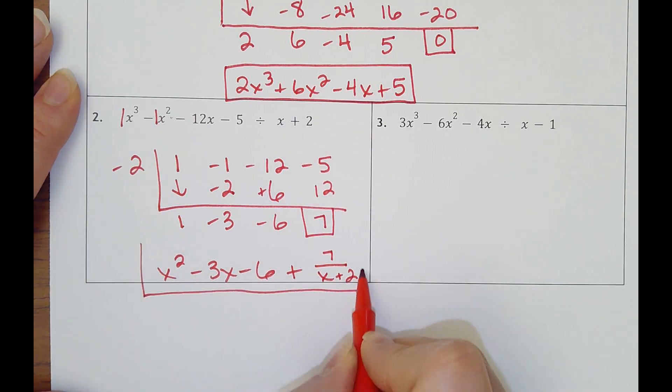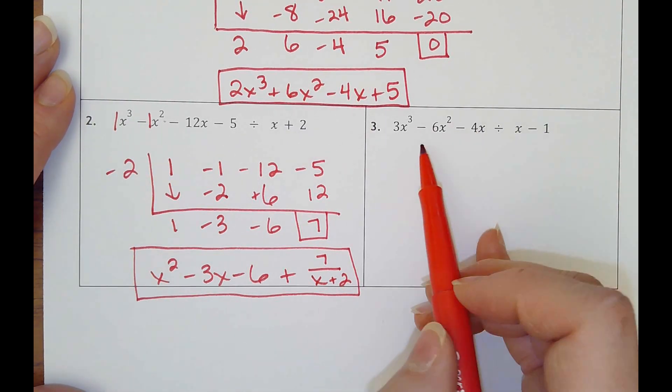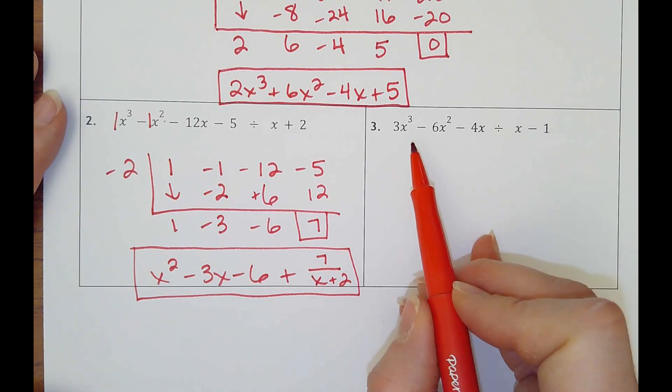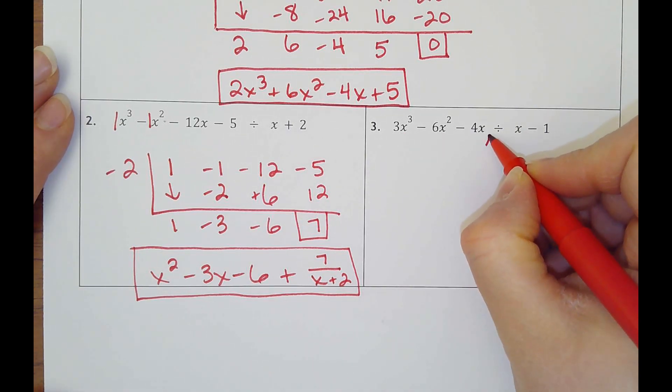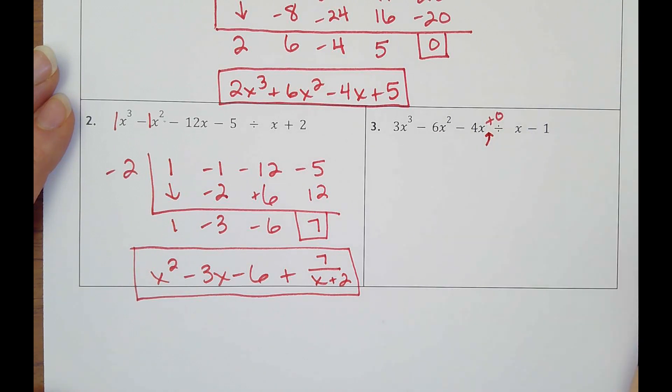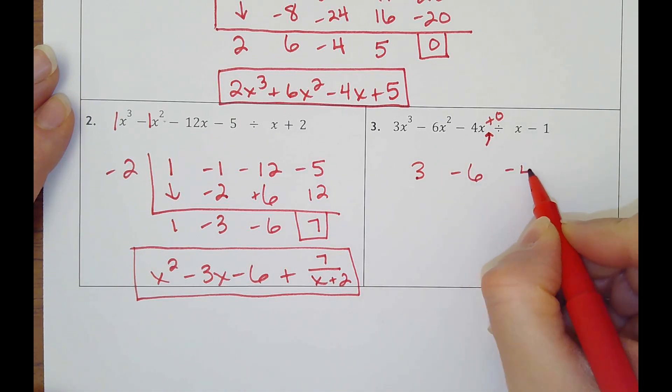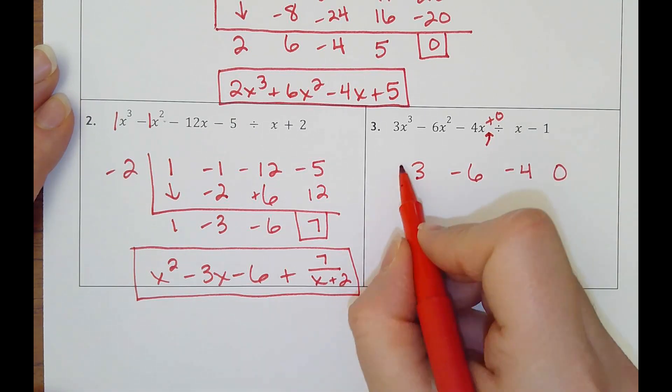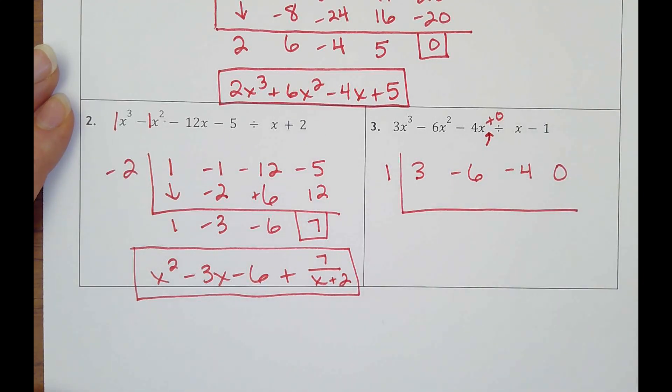The answers look just like we were getting with long division. The last one - you still have to fill in any placeholders with a 0. See, I have x cubed, x squared, x, I need a constant, so I have to have a plus 0 there. So this will go 3, negative 6, negative 4, and then my 0 for my constant. This is x minus 1, so I'm actually dividing by positive 1.